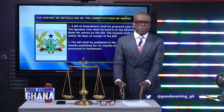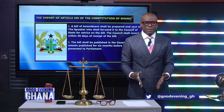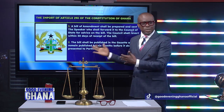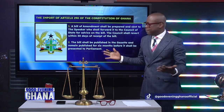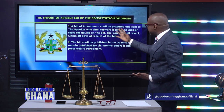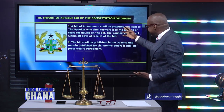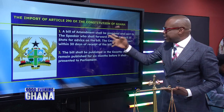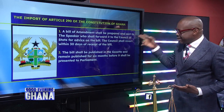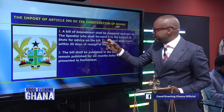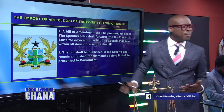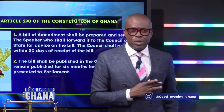President Mahama said in 2015 that he was going to amend Article 71. Did he go through this process? 2015 and 2016 is at least a year. The bill of amendment shall be prepared and sent to the Speaker, who shall forward it to the Council of State for advice. The Council of State shall revert within 30 days — that's the first step. President Mahama is not known to have taken that step about Article 71.